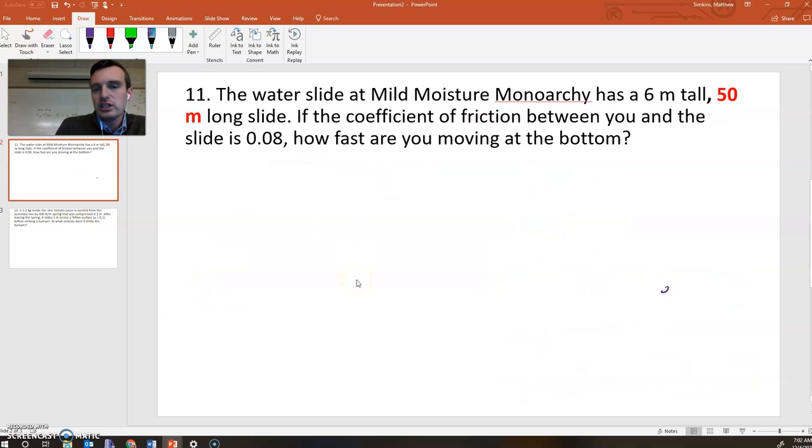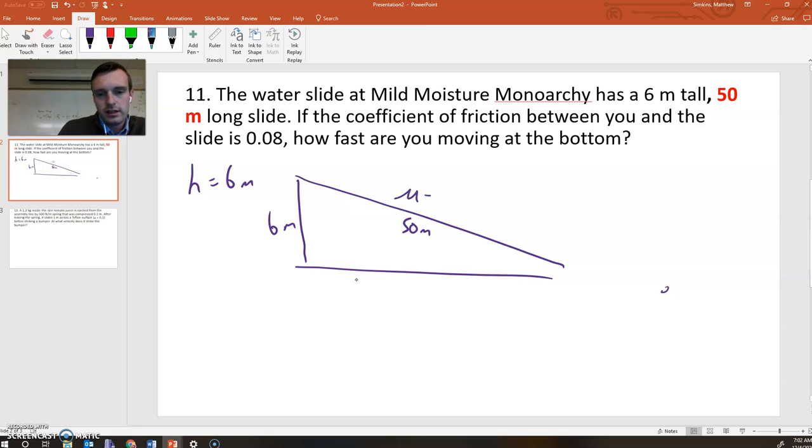How about this one? This one's a little tricky. The water slide at Mild Moisture Monarchy, Wild Water Kingdom, has a 6-meter tall slide. And it's 50 meters long. So what that means is like this. Like that's 50 meters, and it happens to be 6 meters tall. If the coefficient of friction between you and the slide is, oh, so there's a little not-so-slippery part here. There is a little bit of friction. How fast are you moving at the bottom?